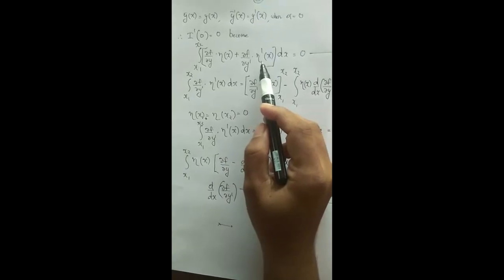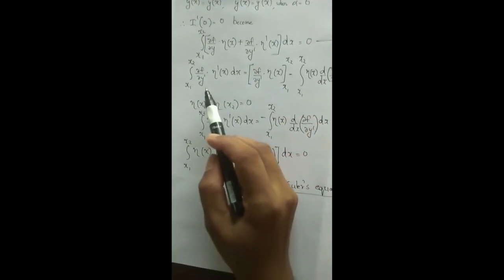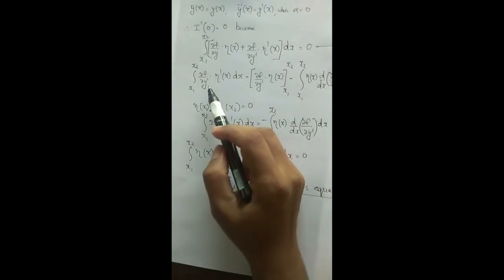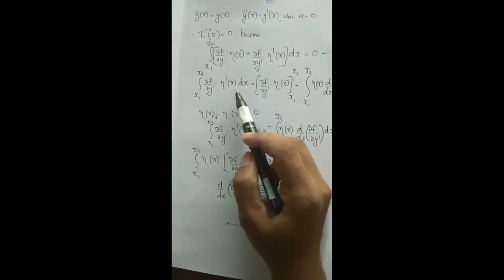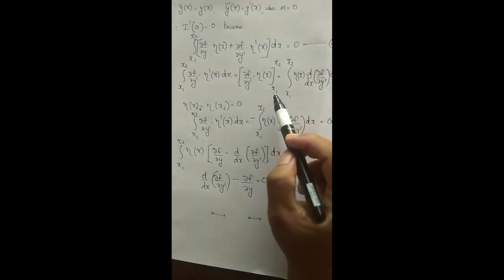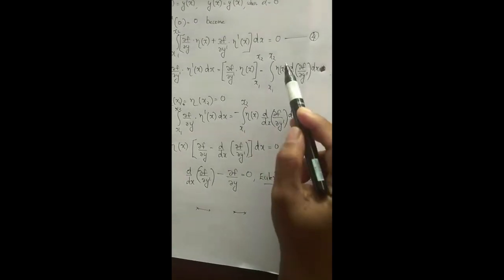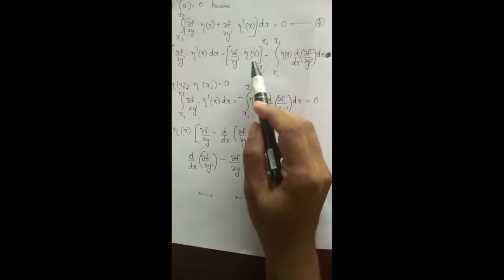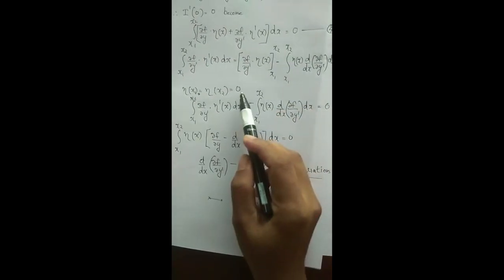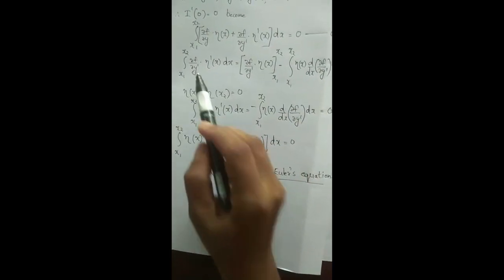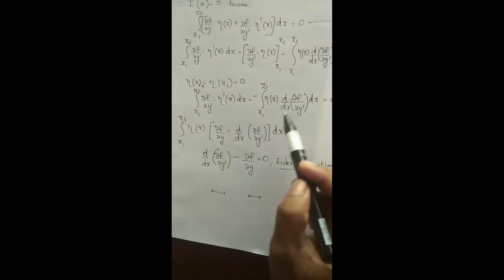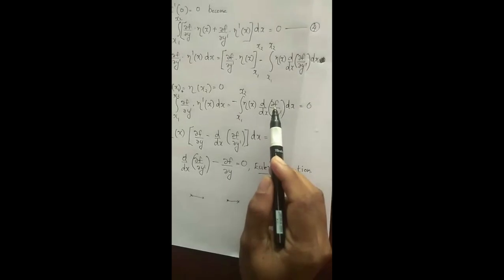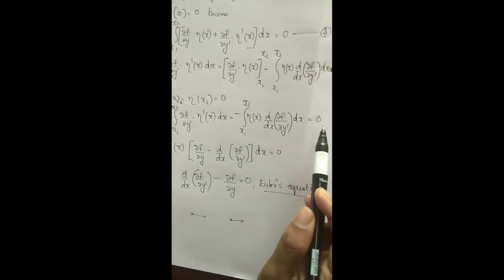The second term contains η'(x). To eliminate this term, we apply integration by parts to the second term and obtain: integral from x1 to x2 of ∂f/∂y' · η'(x) dx = [∂f/∂y' · η(x)] from x1 to x2 minus integral from x1 to x2 of η(x) · d/dx(∂f/∂y') dx. Since η(x1) = η(x2) = 0, we get integral from x1 to x2 of ∂f/∂y' · η'(x) dx = − integral from x1 to x2 of η(x) · d/dx(∂f/∂y') dx.